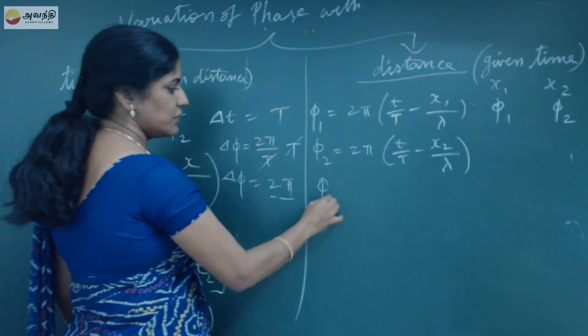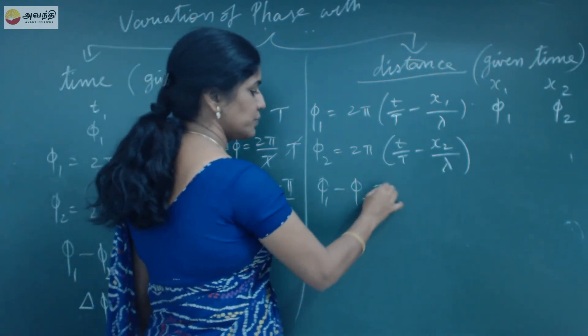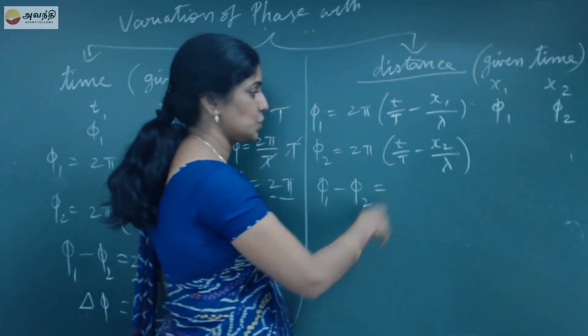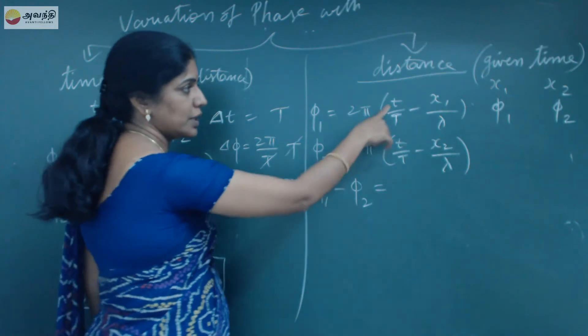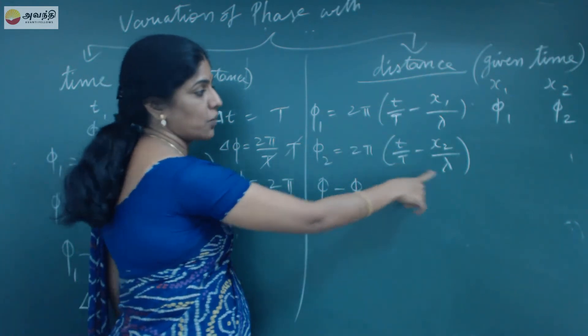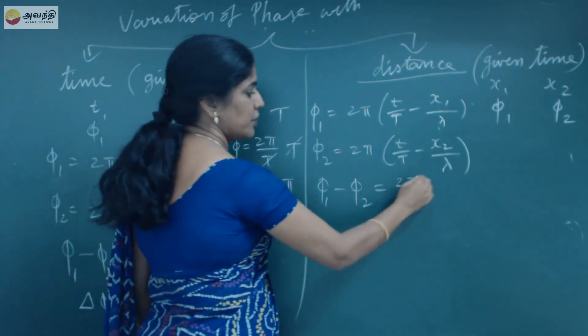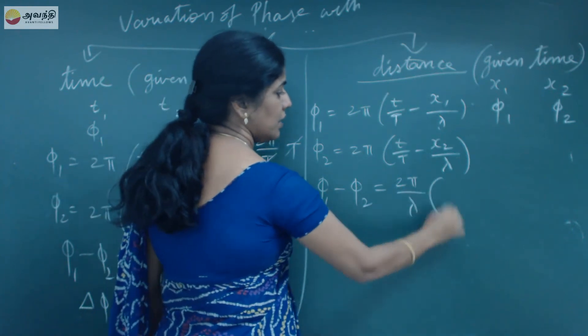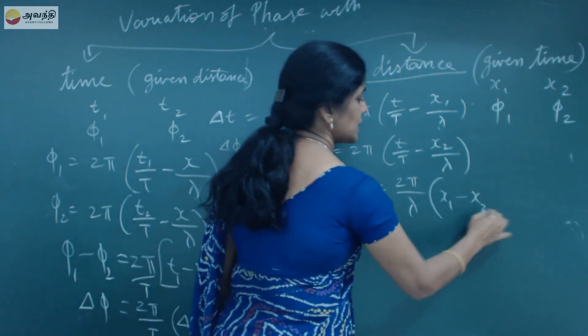Here, again the same thing. You just find out the difference between these two positions. φ₁ minus φ₂. Common R karete, t/T, t/T cancel. Lambda valli. Now, 2π/λ times (x₁ minus x₂).